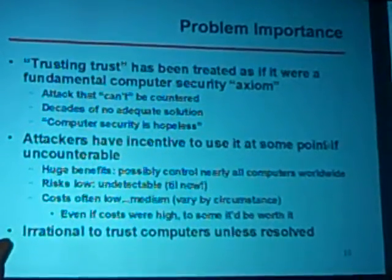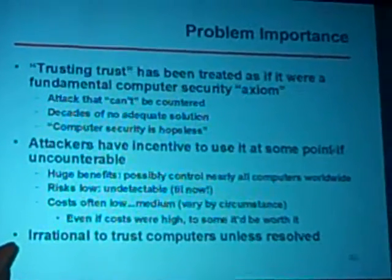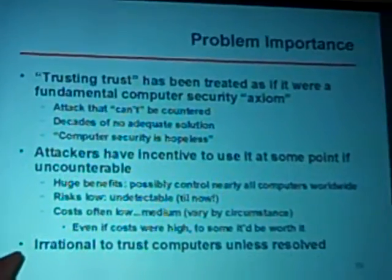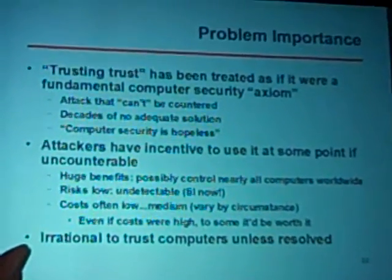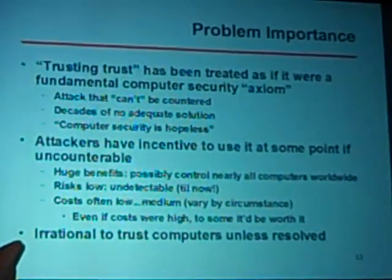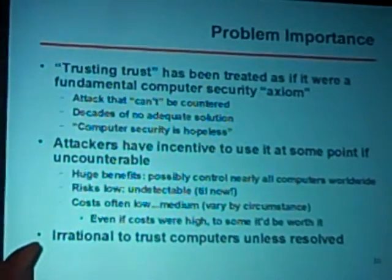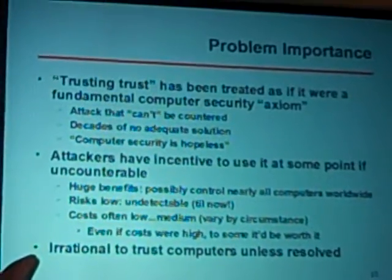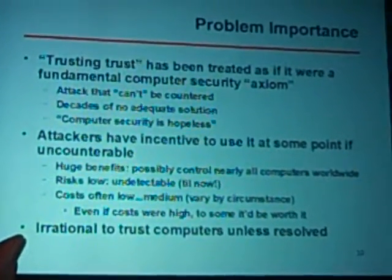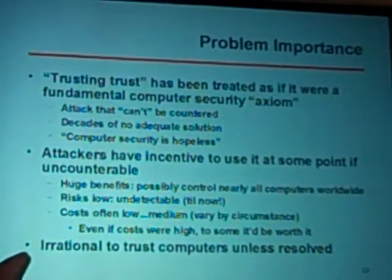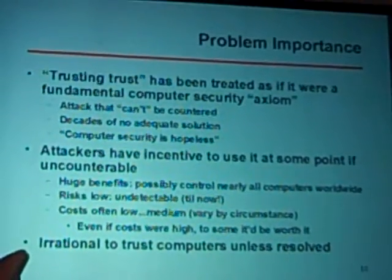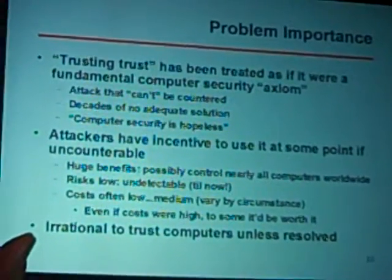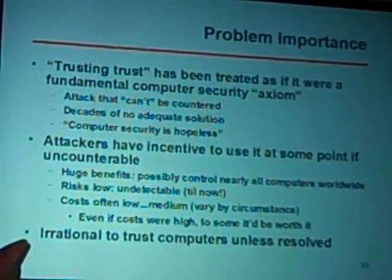This is the attack that can't be countered, and it's not just that people think so — people have tried for decades. Not much has been written, and what's there hasn't been very effective. I've seen citations where someone says computer security is hopeless because of this uncounterable attack. Attackers have incentive to use this: if you control the compiler, you control all software compiled with it. The risks seem low, undetectable, and costs vary. In fact, this year there's already been one example of a subverted compiler, and Ken Thompson did it in 1984.